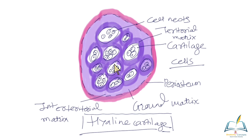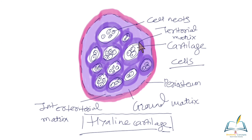You can observe larger cell nests in hyaline cartilage — this group of cells is known as a cell nest. They are more in number, though the cell size is medium compared to other cartilages. The cell nests are the largest in size and are abundant, making cell nests a classical feature of hyaline cartilage. You can also see the territorial matrix, which is a little darkly stained due to higher protein concentration, becoming paler at the periphery.